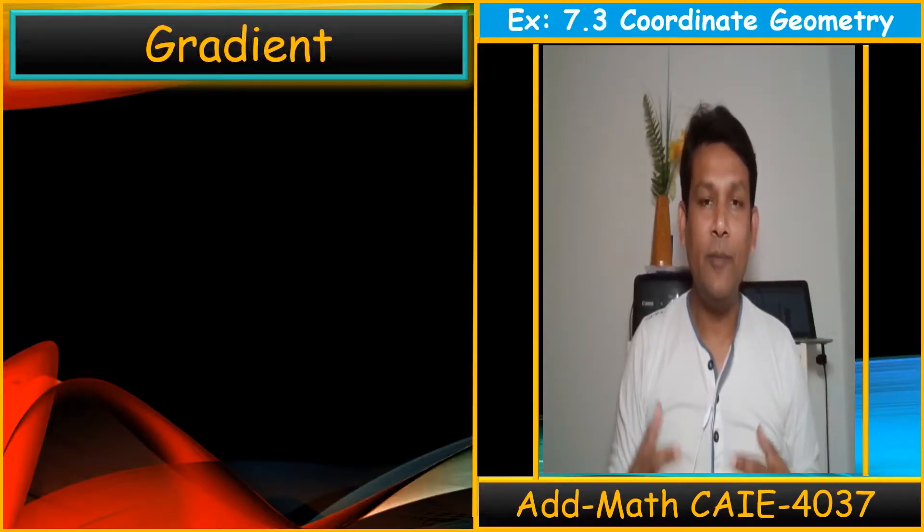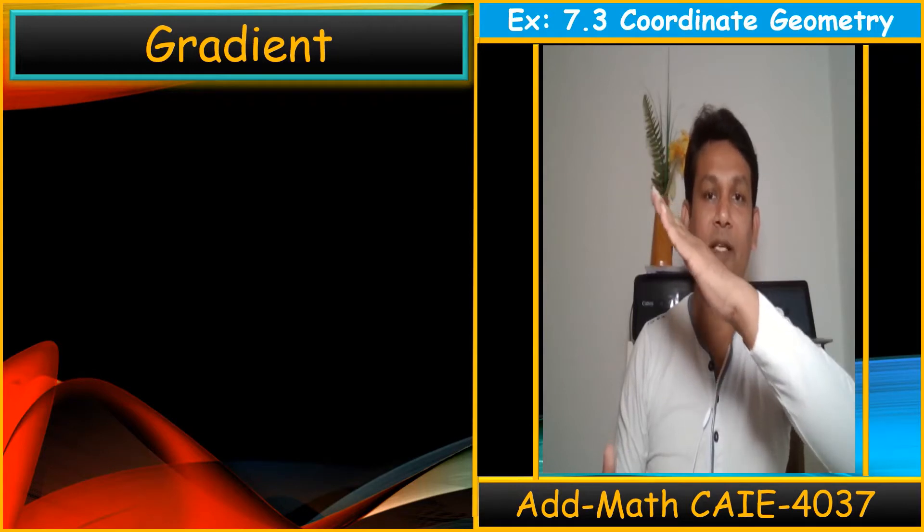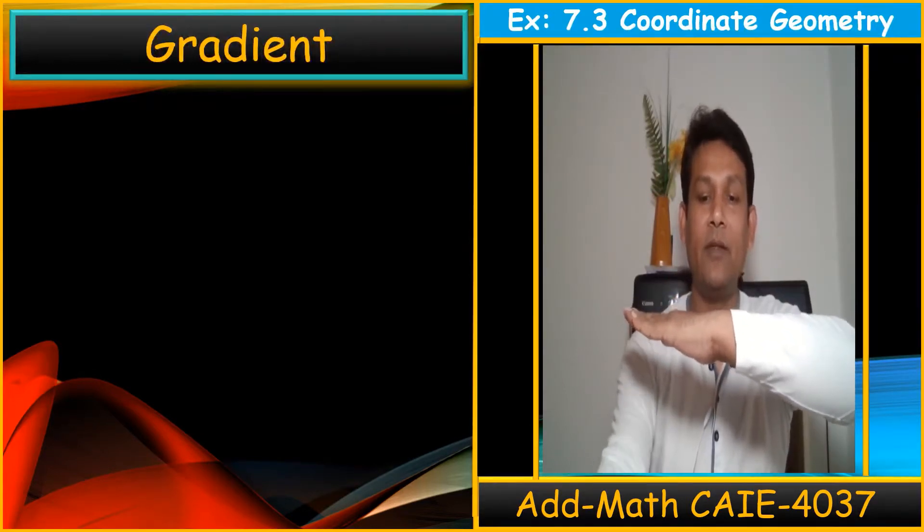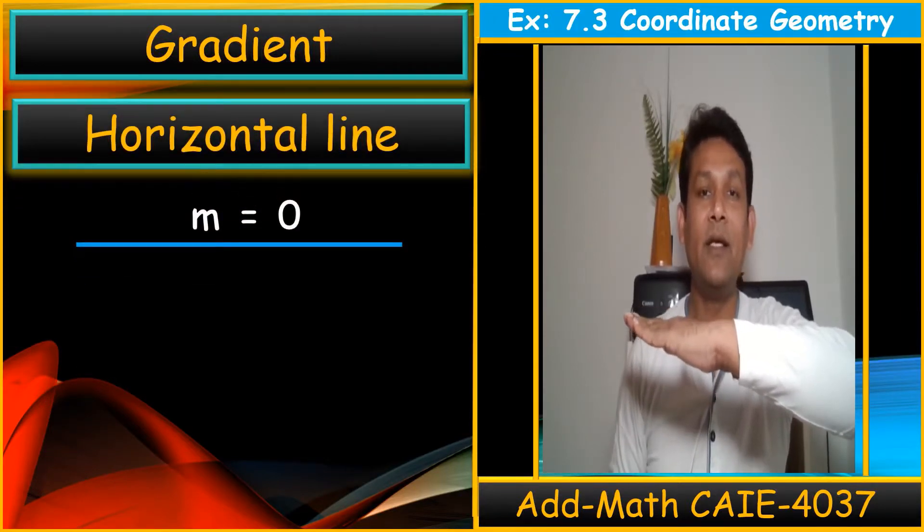The gradient of a line is only possible when the line is tilted or has a slope. When the line is horizontal, it means there is no gradient. No gradient means the gradient is zero.